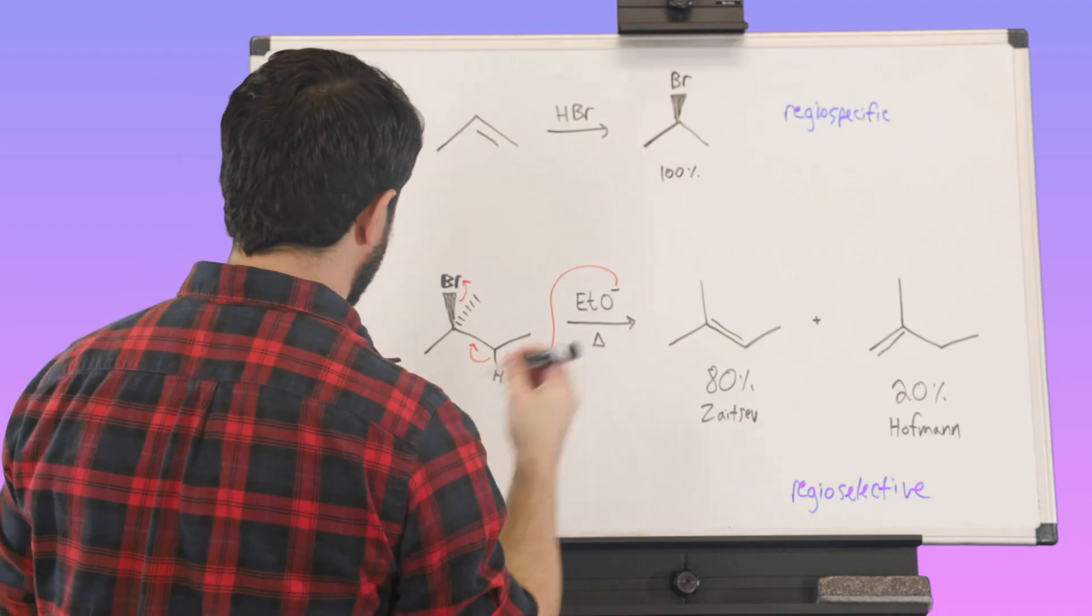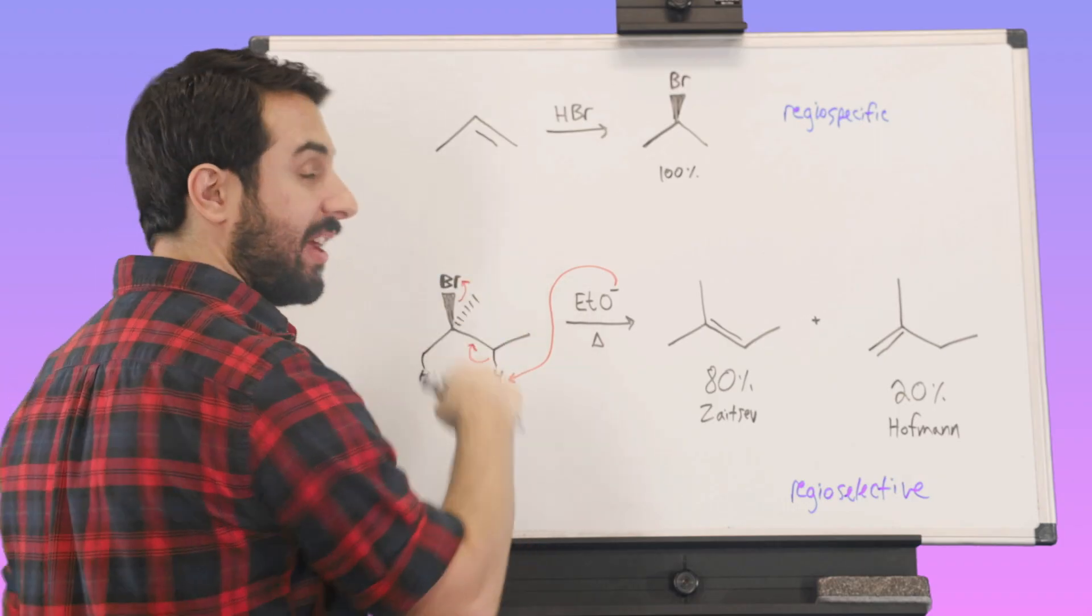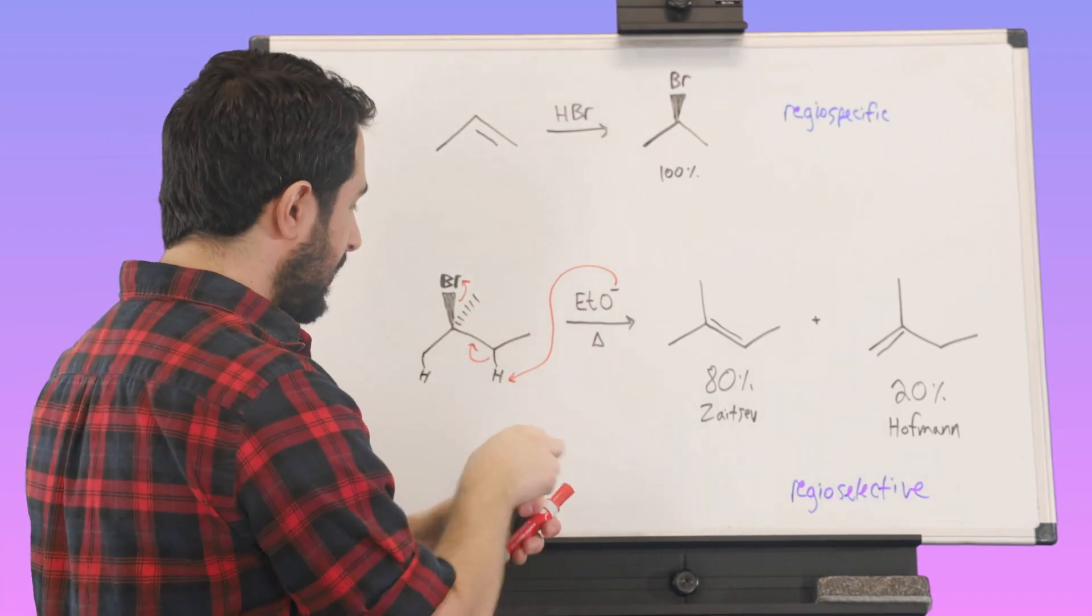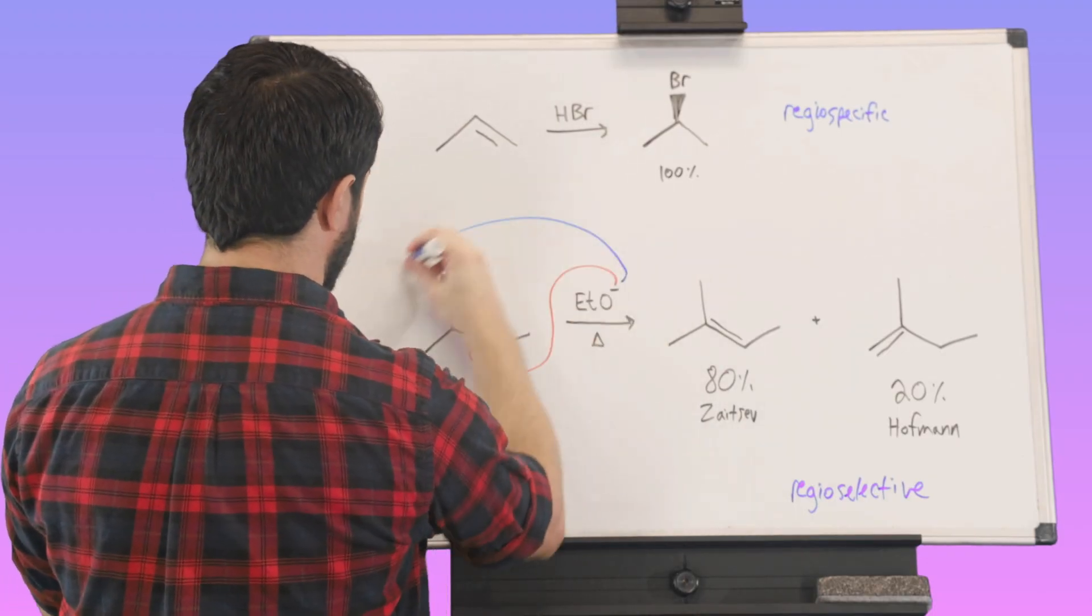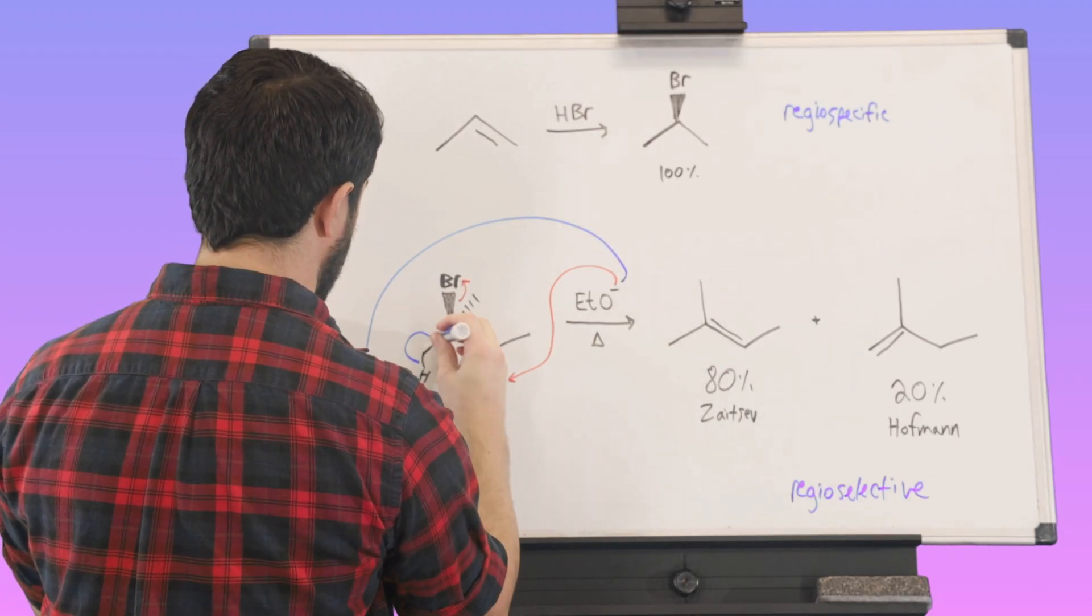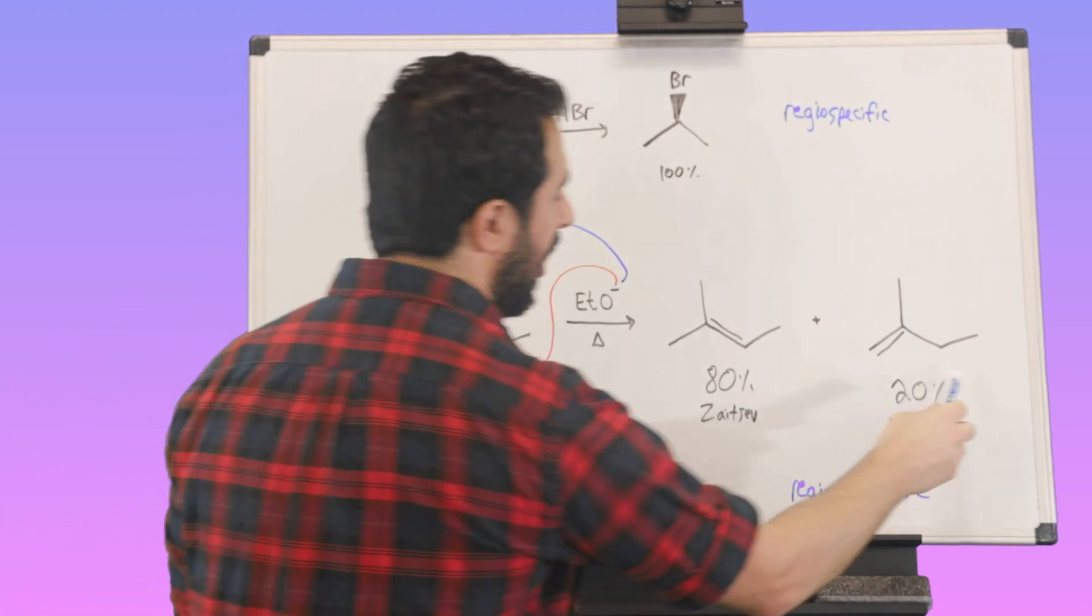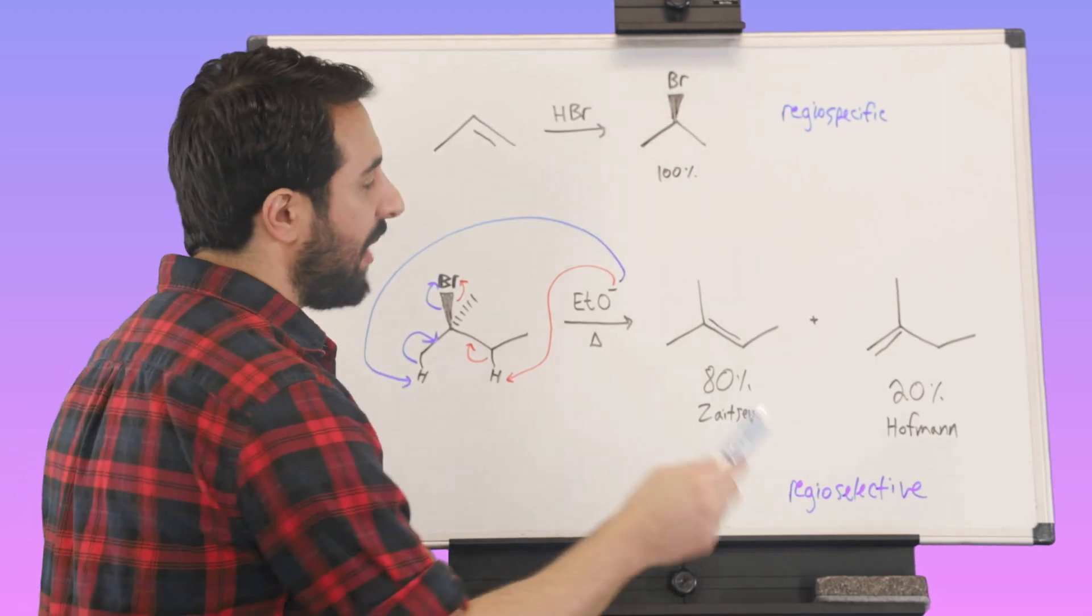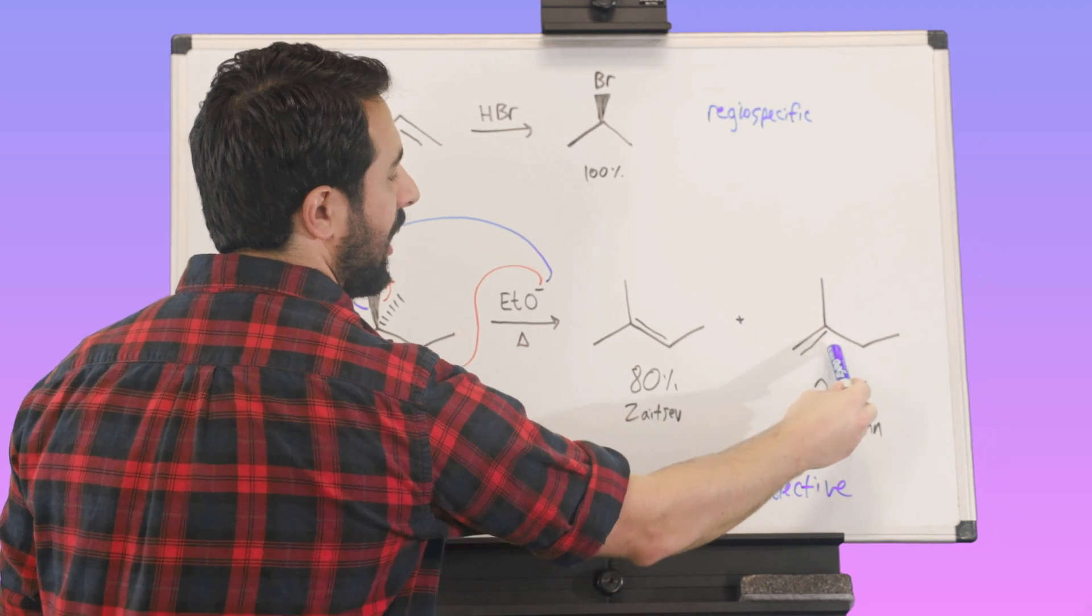By contrast, we could get any of the protons, there's three protons here, three protons here on those two methyls. So six chemically equivalent protons that we could also get to get the other products. So we could go over here and we could get that and we could kick this off that way and that would give us the Hoffman product and we're only going to get about 20% of the Hoffman product. Remember that would be kinetically favored. This is the less thermodynamically favorable. It's not as low on an energy diagram.